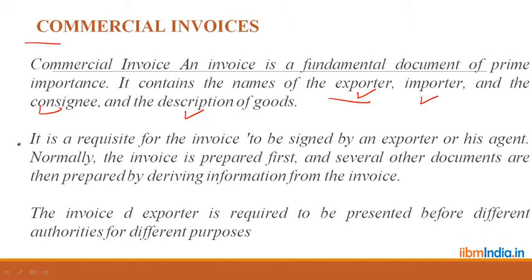The commercial invoice is a very fundamental document of prime importance containing the name of the exporter, importer, and consignee, and the description of the goods. It must be signed by the exporter or his agent. The invoice is prepared first, and all other documents are then derived from it. The exporter is required to present the invoice before different authorities for different purposes.